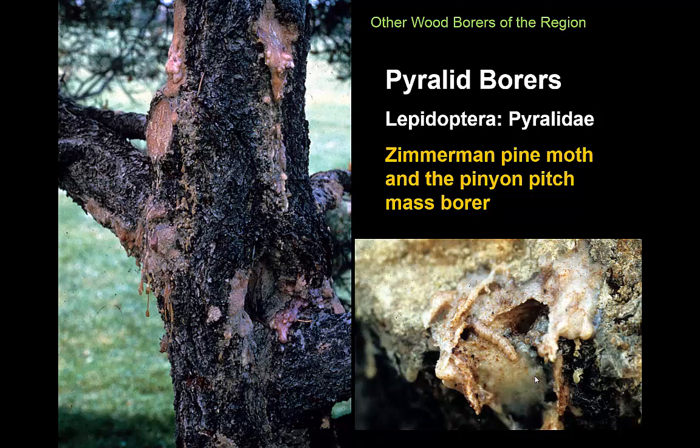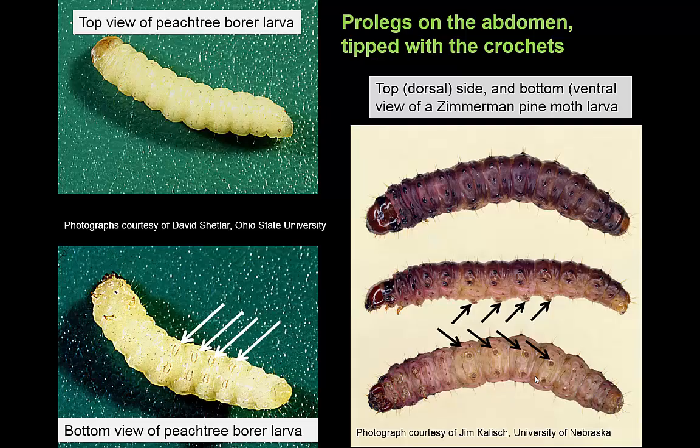Moving on to more minor borer groups — though important on their host plants — we have the pyralid borers. They're called that because they're in the family Pyralidae within Lepidoptera, and include insects that develop in conifers, particularly pines. Two species are especially common in this part of the country: the Zimmerman pine moth and the pinion pitchmass borer. As Lepidoptera larvae, these will be caterpillars that develop within a tree and will have prolegs tipped with some sort of hooks — crotchets — on the tip of the prolegs.